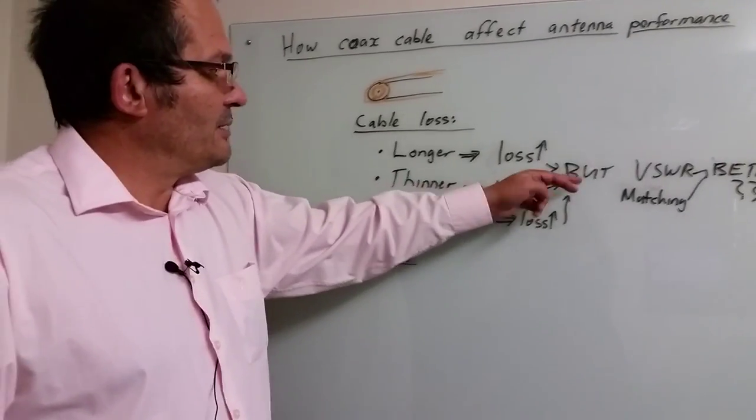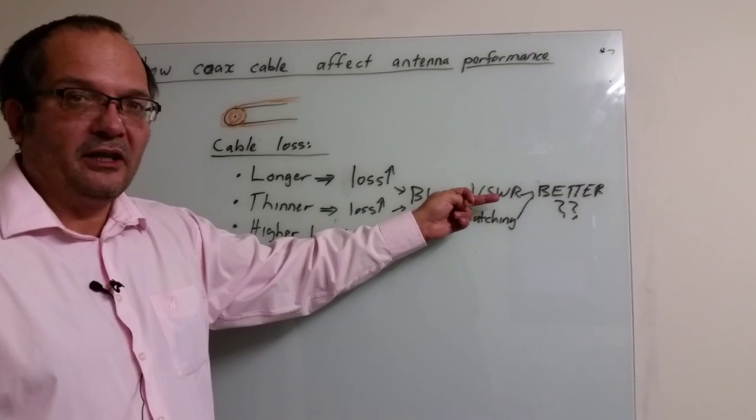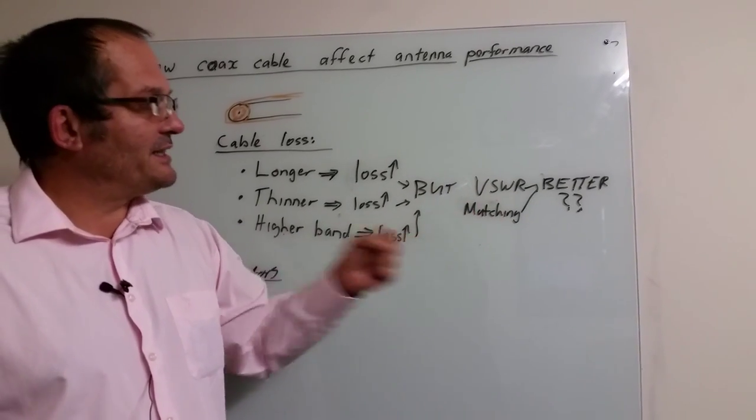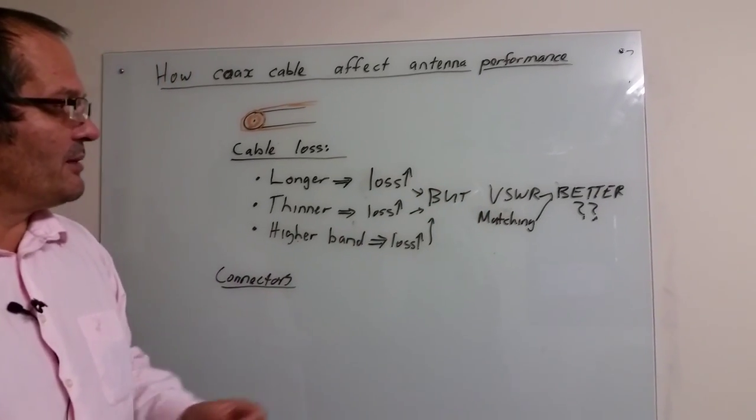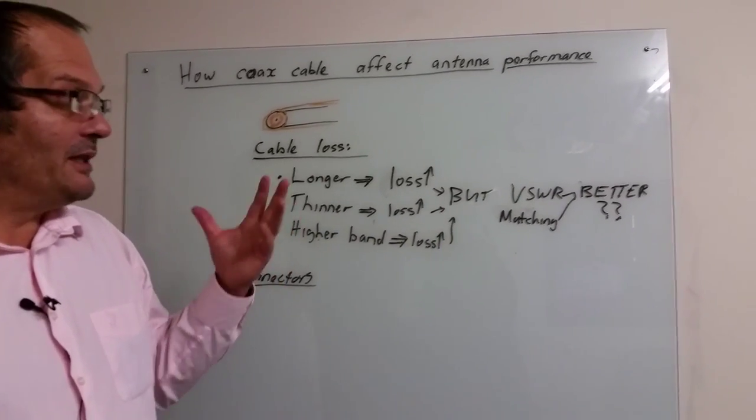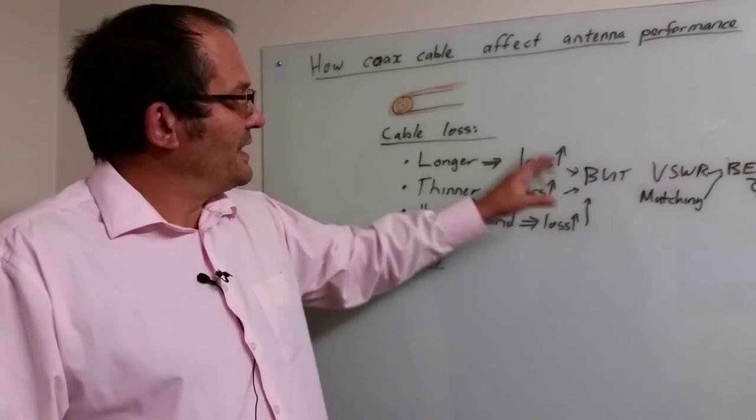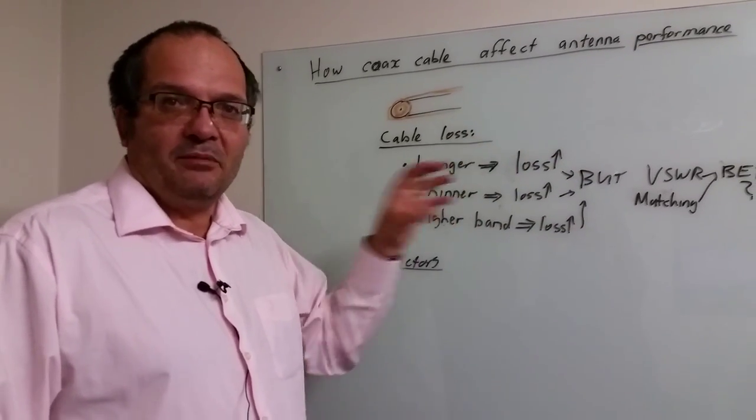One interesting thing is what we call VSWR, which you'll see quoted on many data sheets. This indicates the matching - how well it absorbs the power. If there's loss in the cable, that doesn't mean the antenna VSWR is actually better, it just means the loss hides bad VSWR.